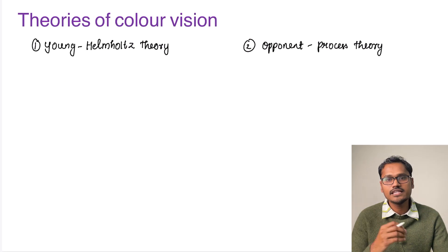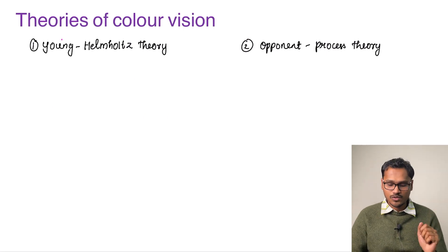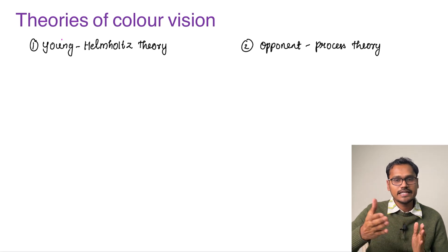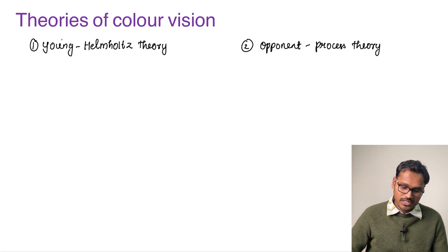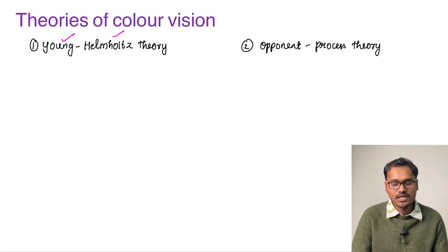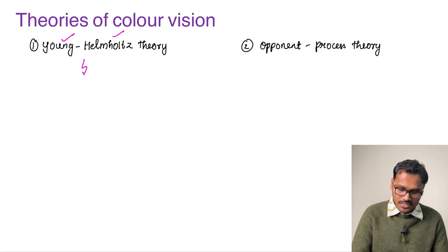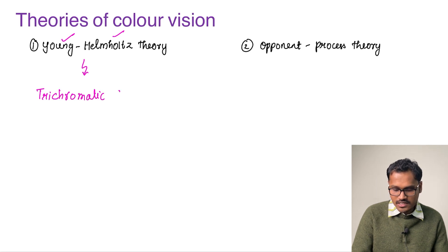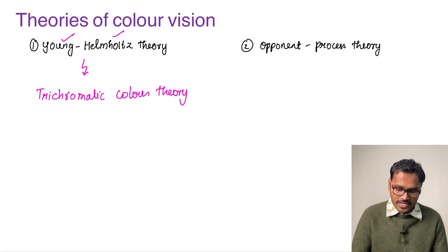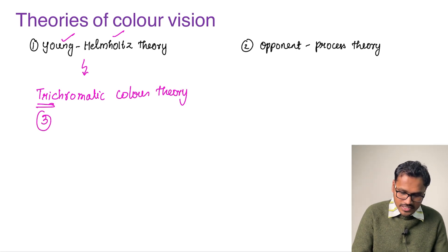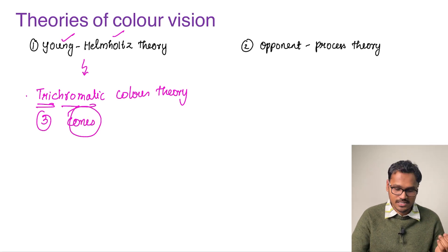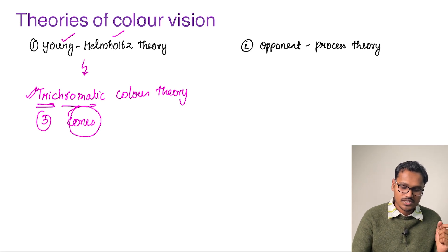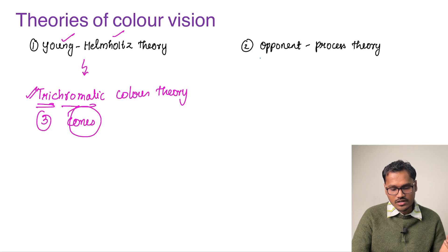Now coming to the theories of color vision. We already understand that there are three different types of cones. This theory was proposed by a scientist called Young Helmholtz, and is therefore called the Young-Helmholtz theory, also known as the trichromatic color theory. It is called trichromatic because there are three different types of cones, each responding to different colors.